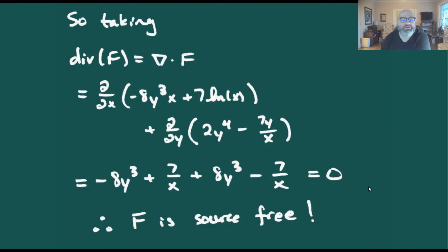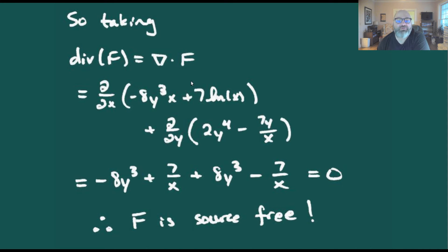Since it's simply connected, determining if it's source-free is just really asking: is the divergence of that vector field going to be zero? So for the divergence, we've got del dot f — we take the partial with respect to x from the first component plus the partial with respect to y for the second component.